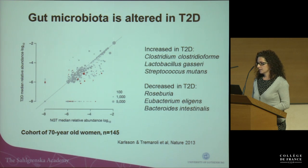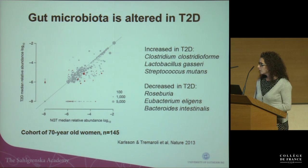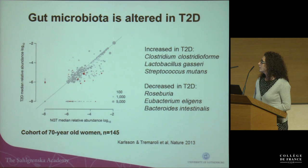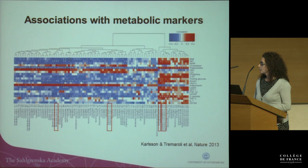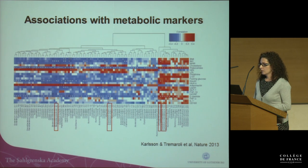I will show you results from a published study where we analyzed the gut microbiota in type 2 diabetes in a cohort of women. We saw that the gut microbiota was altered: there were increased Clostridium clostridiforme, Lactobacillus gasseri, and Streptococcus mutans in type 2 diabetes patients, and a decrease of Roseburia, Eubacterium melligens, and Bacteroides intestinalis. We also observed that some of these species were related to important biomarkers for metabolic disease.